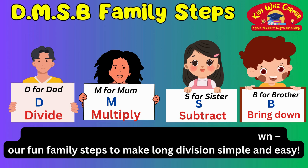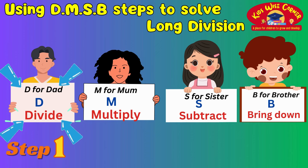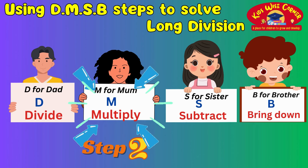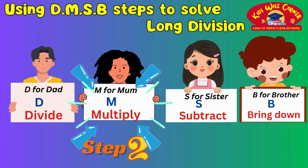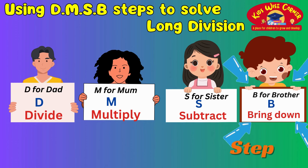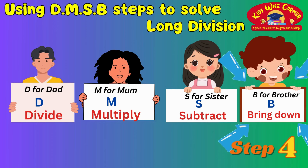Step 1: we start with D for Dad first. D stands for divide in long division. Step 2: next we have M for Mum. Mum helps us to multiply — M is for multiply. Step 3: we have S, which is for Sister. S stands for subtraction in long division. Step 4: the 4th step is B for Baby Brother, who always goes last. B is for bring down in long division.